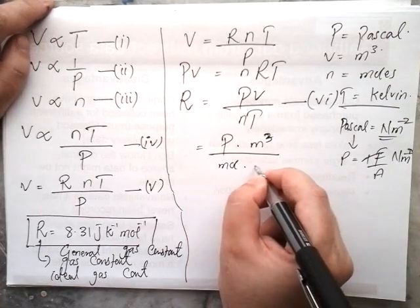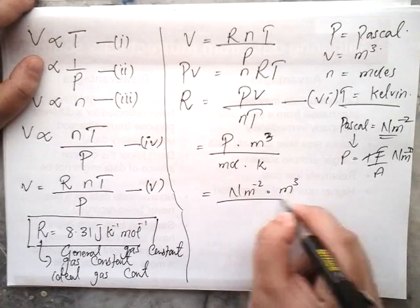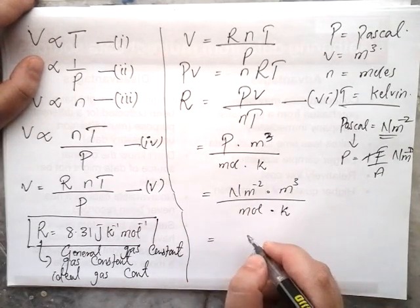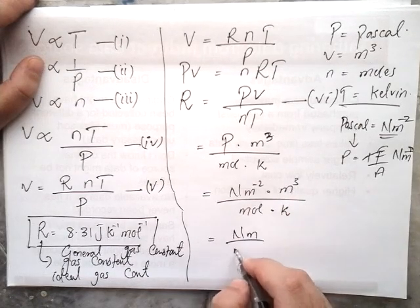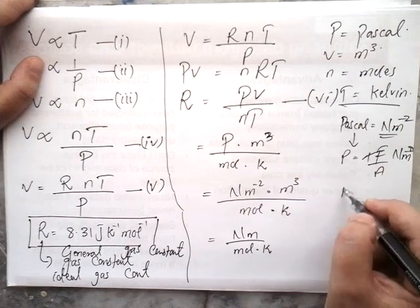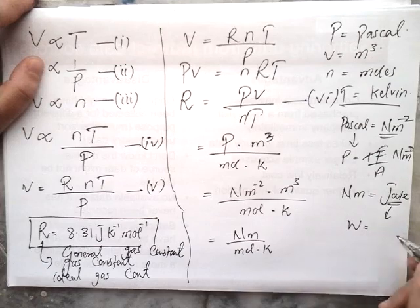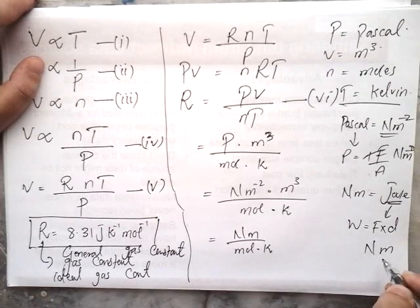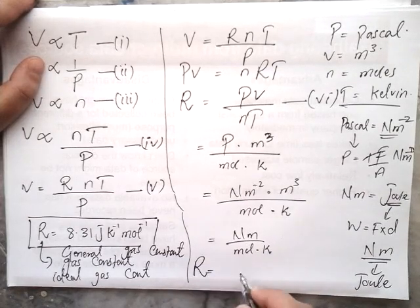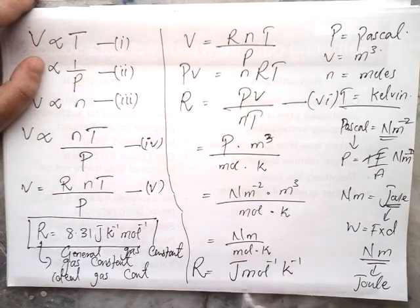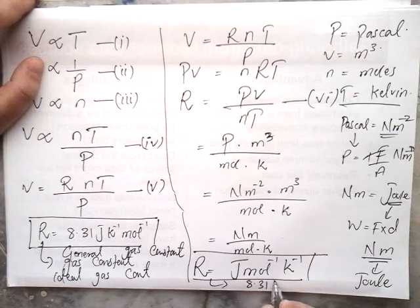Simplifying the units: Pascal × m³ = Newton·m²⁻¹ × m³ = Newton·m (since -2 + 3 = 1). We know that Newton·meter equals joule — since work = force × distance and joule is the unit of work. So the unit of R comes out to be joule per Kelvin per mole, and its value is 8.31 J/(K·mol).